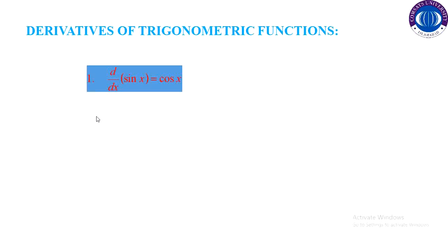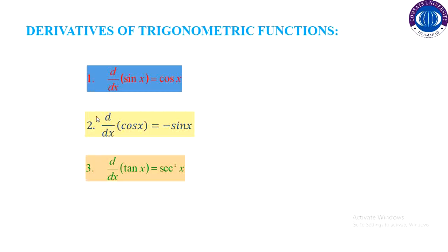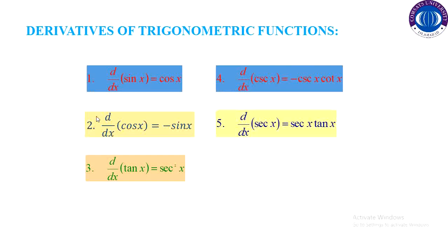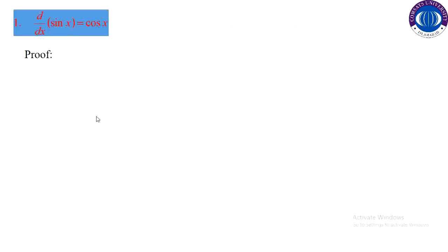Here we will discuss the derivatives of six basic trigonometric functions. The derivative of sine x is cos x. The derivative of cos x is minus sine x. The derivative of tangent x is secant square x. The derivative of cosecant x is minus cosecant x cot x. The derivative of secant x is secant x tangent x. The derivative of cotangent x is minus cosecant square x.